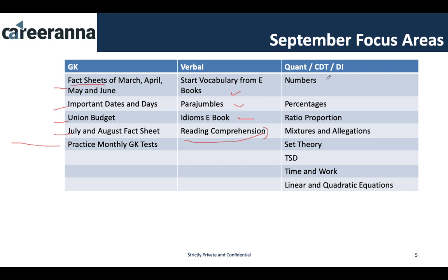When it comes to CONT, start with numbers only if it is your strong area. If CONT is your weak area, you can leave numbers for now. Focus on arithmetic and linear and quadratic equations — if you can do these well, you are set to clear the CONT cutoff. Numbers is a very complicated topic, so if you are starting preparation now, do not touch numbers. Arithmetic and linear/quadratic equations will suffice.